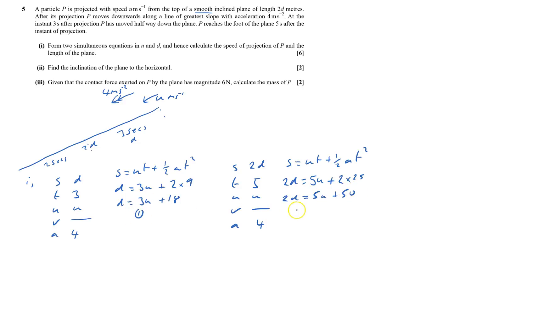So if I call this equation 1 and this equation 2, if I do equation 1 times by 2, that gives me 2d equals 6u plus 36, and I've got 2d equals this. Therefore I get 6u plus 36 equals 5u plus 50, and that says that u equals 14 meters per second.